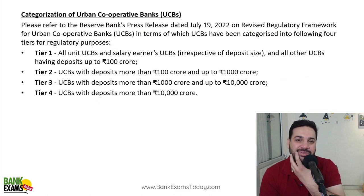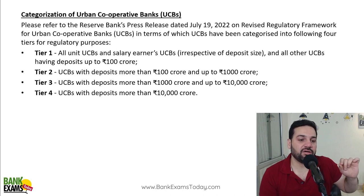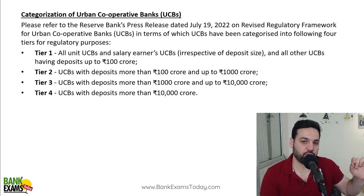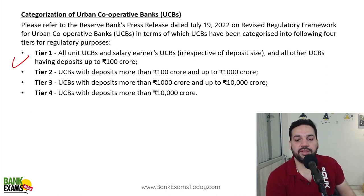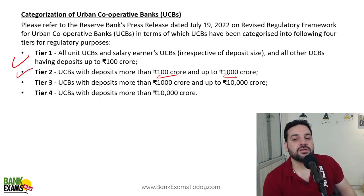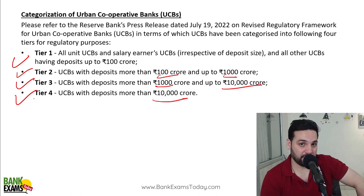First, the categorization of Urban Cooperative Banks. In a previous circular, RBI categorized Urban Cooperative Banks according to deposit size. Any UCB with deposits up to ₹100 crores is Tier 1. Deposits more than ₹100 crores but less than ₹1,000 crores is Tier 2. More than ₹1,000 crores but less than ₹10,000 crores is Tier 3. More than ₹10,000 crores is Tier 4. That is the categorization done by RBI.